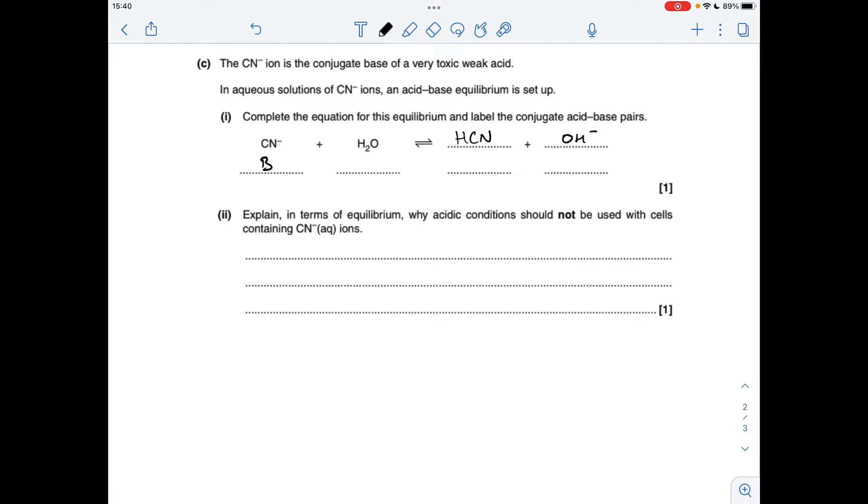So if we call this B1, therefore that's A1, the conjugate acid of pair 1, so this must be A of pair 2, so this is the B of pair 2.